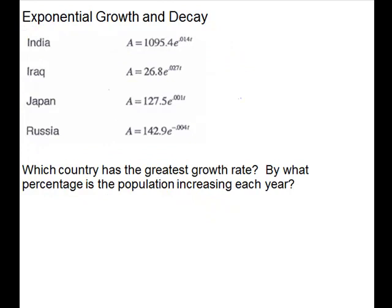Our next question asks: which country has the greatest growth rate? Alright, so we look at these and we want to see which of these is the highest number. So .014, 0.027, 0.001, and our last one is negative. So the 0.027 is the highest one, and so the country is Iraq, and it's increasing 2.7 percent each year.